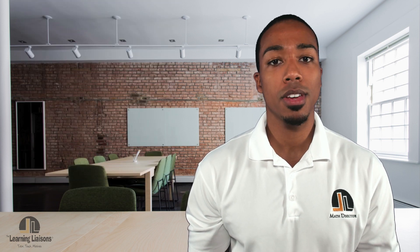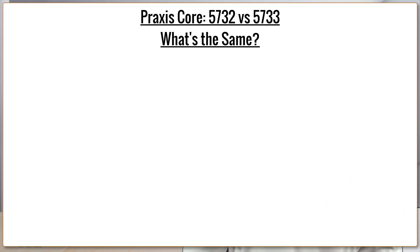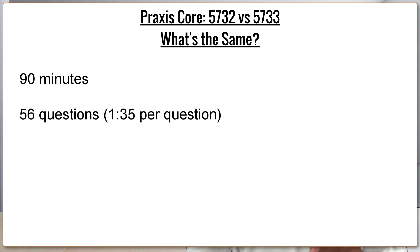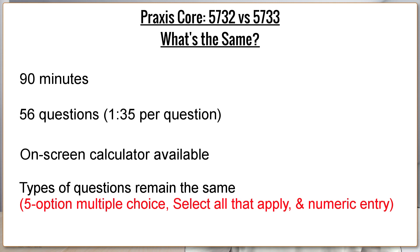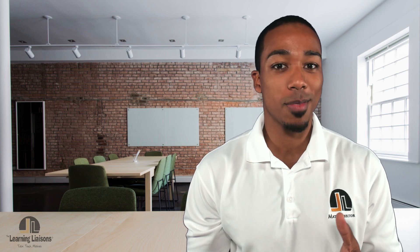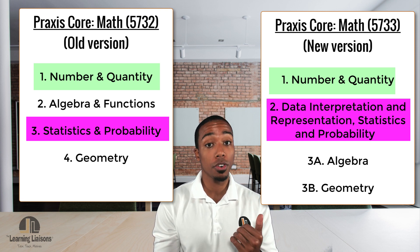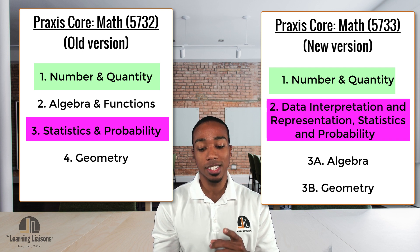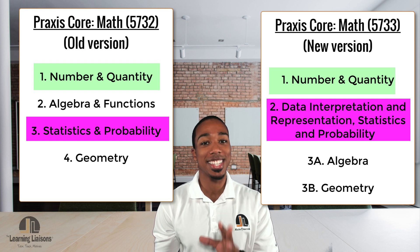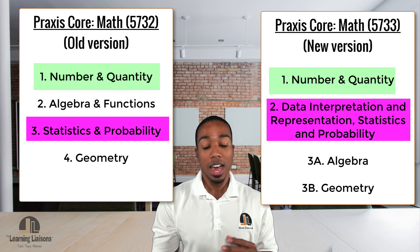They did away with some types of problems, but for the most part the content is the same. Everything that stayed the same: the test is still 90 minutes, still 56 questions, giving you just about 1 minute and 35 seconds per question. There is still an onscreen calculator, and the question types have not changed — you still have selected response for one option, selected response for multiple options, and numeric entry questions. The four categories are pretty much the same; one of them just had its name changed slightly. Those four categories are number and quantity, data interpretation — changed from 'statistics and probability' in the old version to 'data interpretation and representation, statistics and probability' in the new one — and then algebra and geometry.